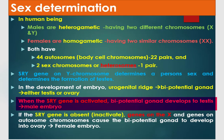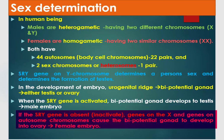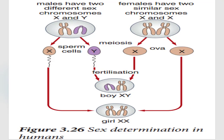When the SRY gene is activated, the bipotential gonad develops into a testis and the embryo becomes male. If the SRY gene is absent or inactivated, genes on the X chromosome and genes on autosomal chromosomes cause the bipotential gonad to develop into an ovary and the embryo becomes female.